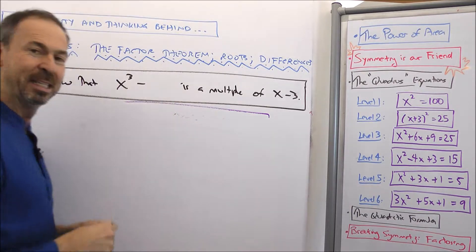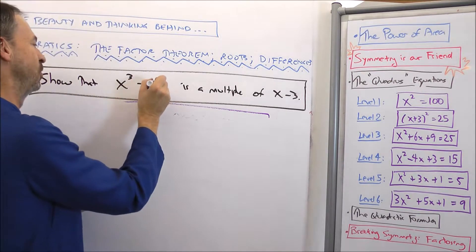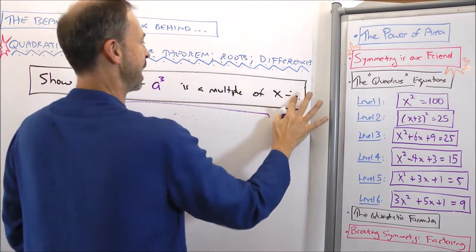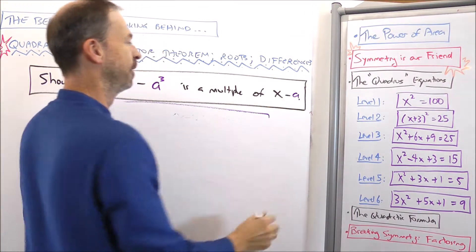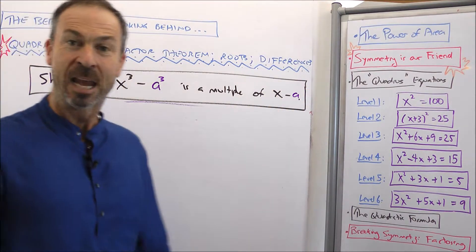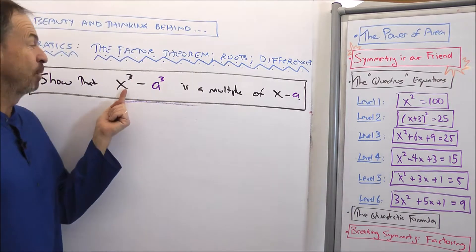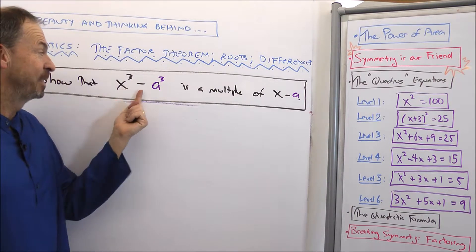So if I'm doing 27, which is 3 cubed, I'll do a³, and I claim this is a multiple of x minus a. And of course it is, because I put in x equals a into this formula, I get a³ to take away a³ is 0,